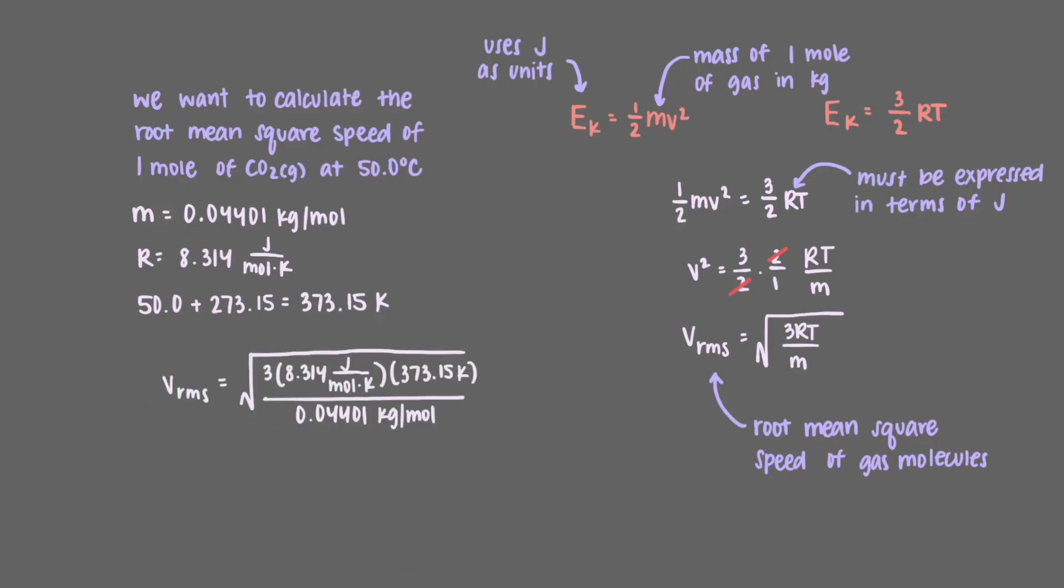That's right! We've just calculated that the root mean square speed of one mole of carbon dioxide is equal to 428 meters per second.